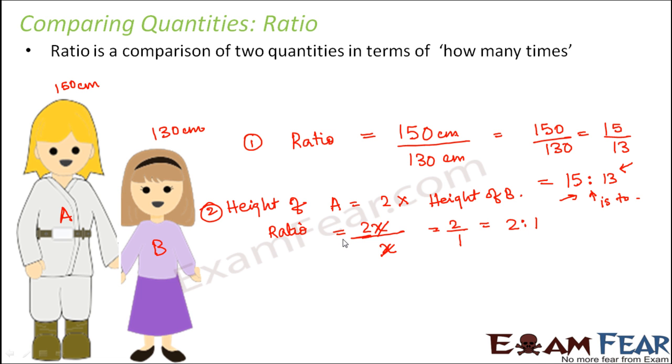Therefore height of A is 2, height of B is equal to 2 is to 1. This shows that if height of B is 1, then height of A would be 2. So this 2 and 1 are not the actual heights. They just tell the ratio between their heights.